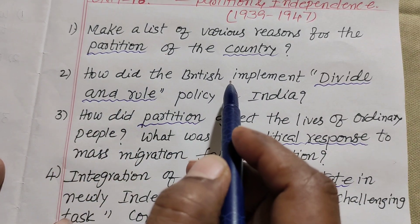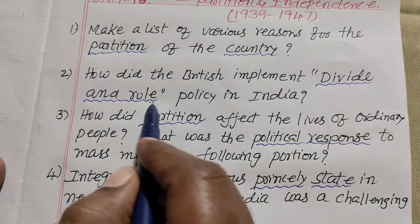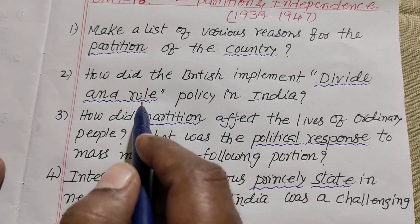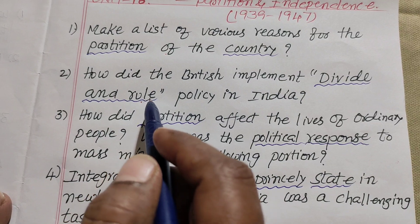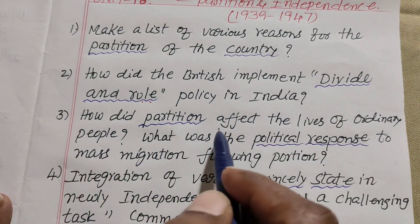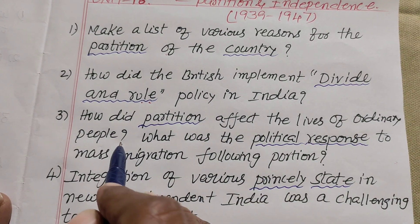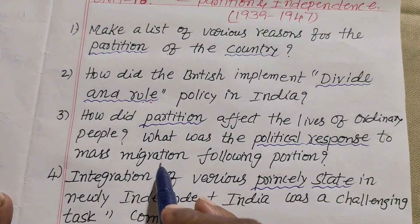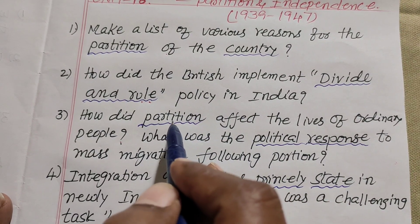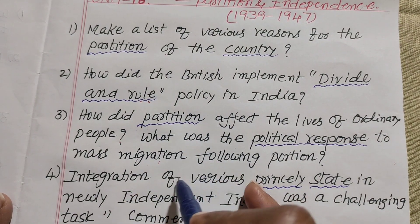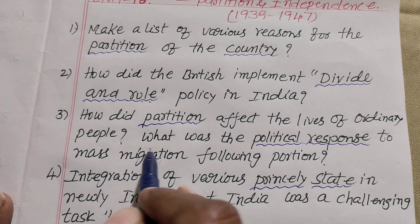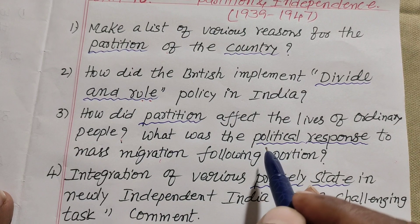Second question: how did the British implement the Divide and Rule policy in India? Third question: how did the partition affect the lives of ordinary people? What was the political response to mass migration following partition?